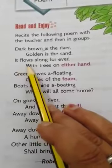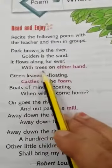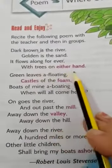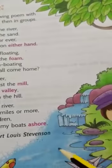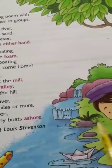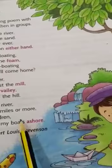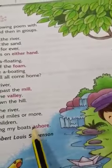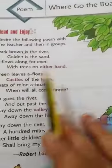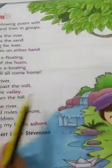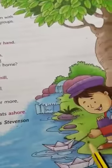It flows along for ever with trees on either hand — and it says that it flows through both sides. 'Either hand' means on both sides, each side. This side has trees and this side also has trees.